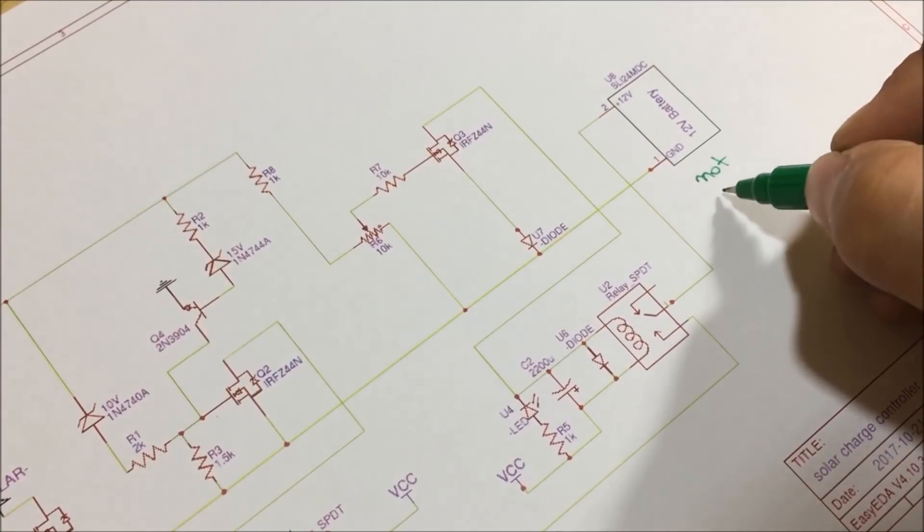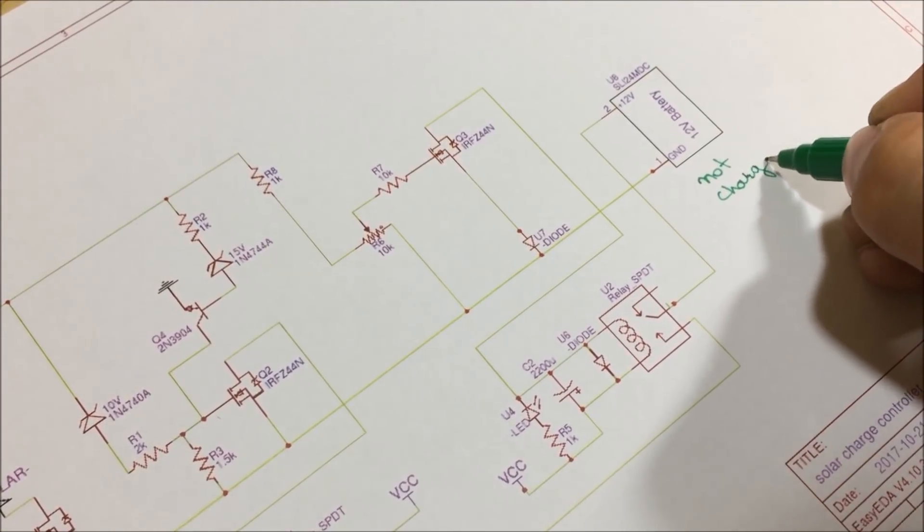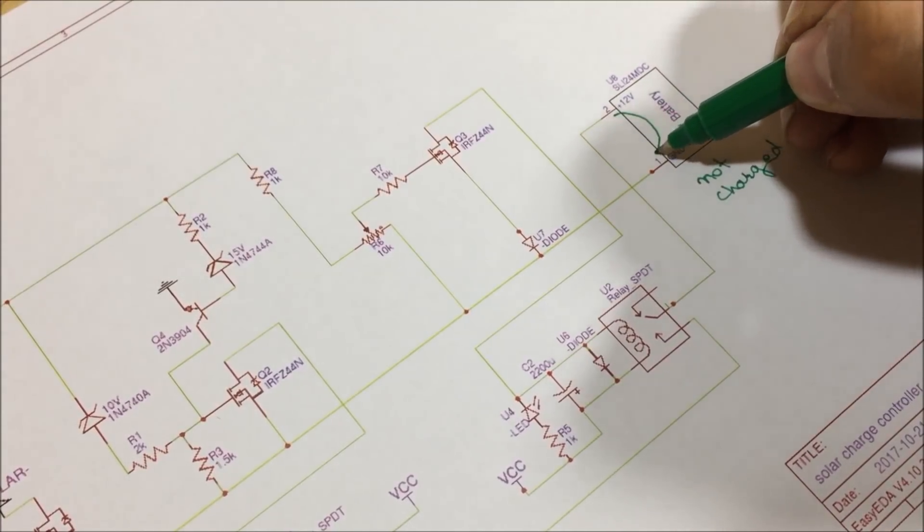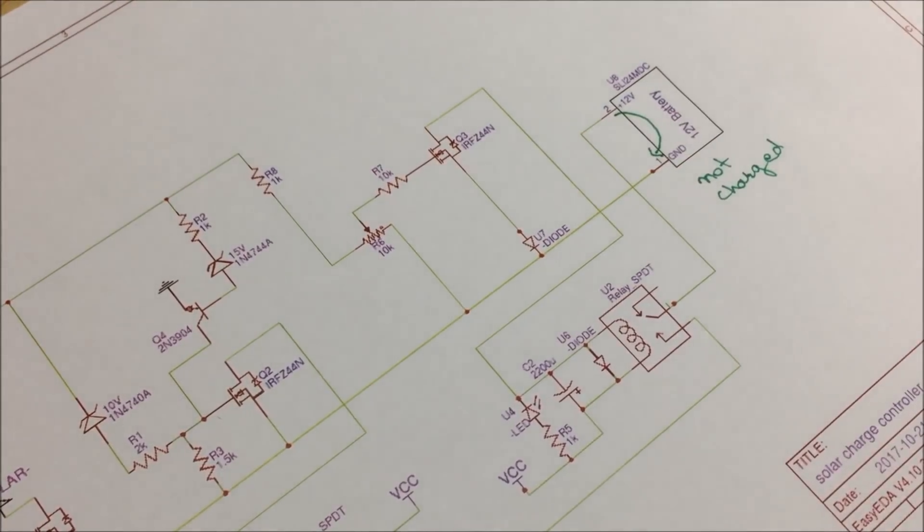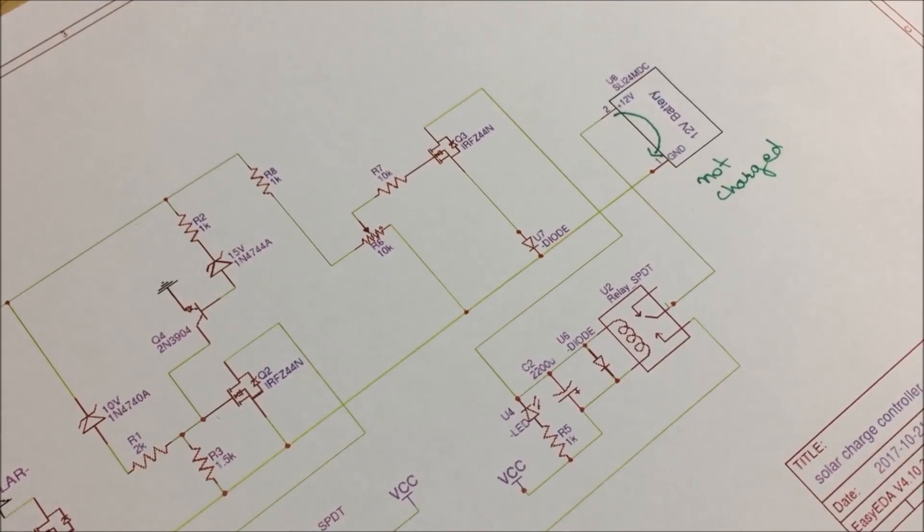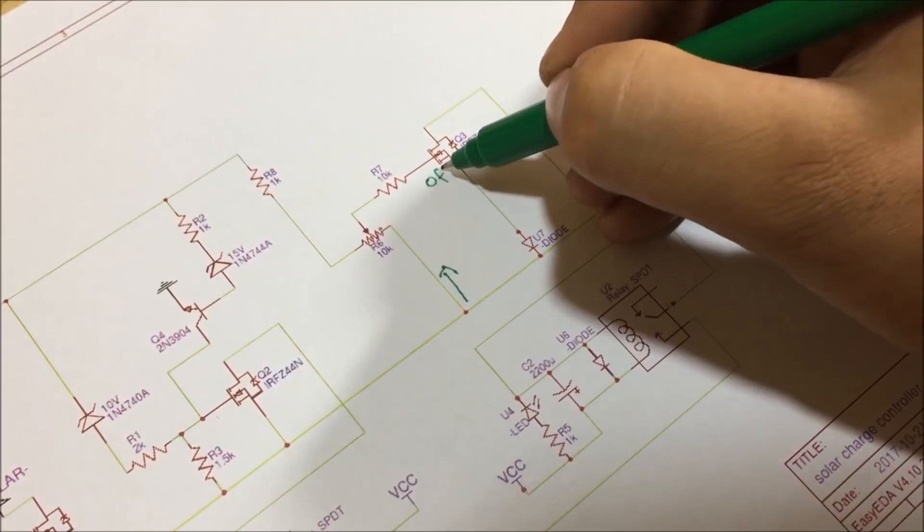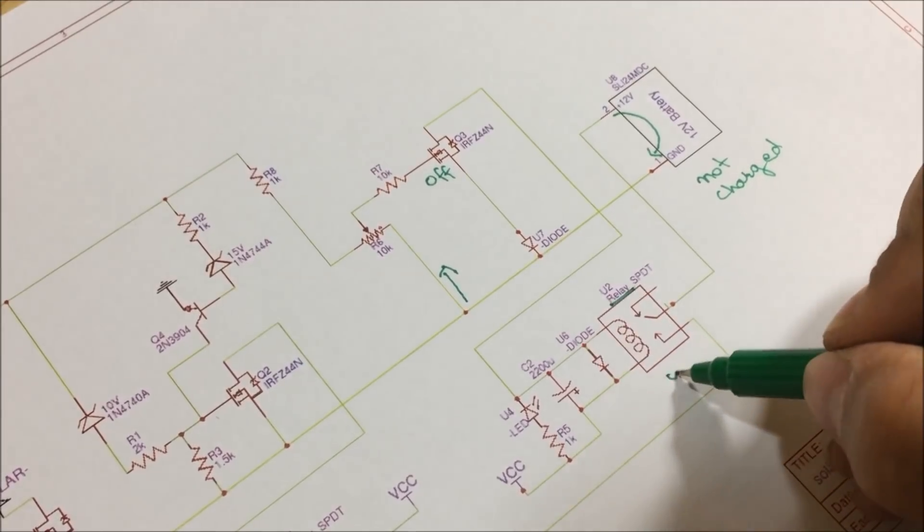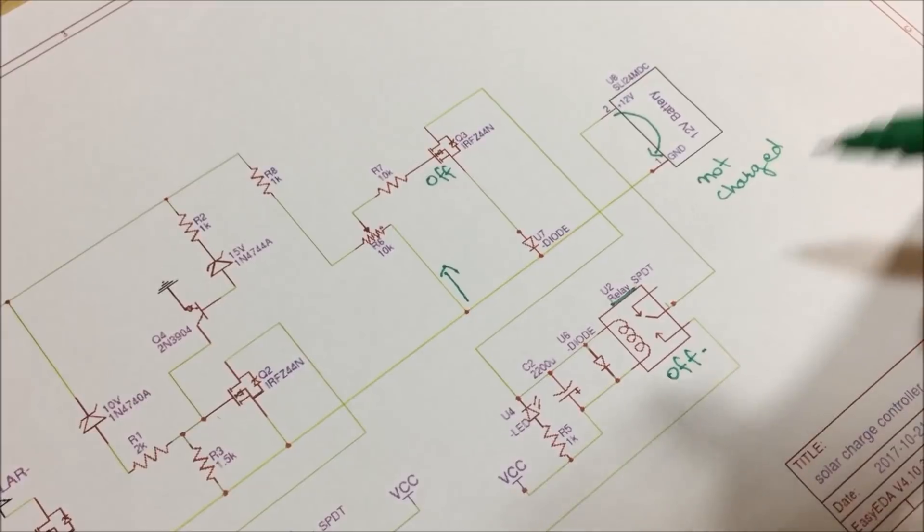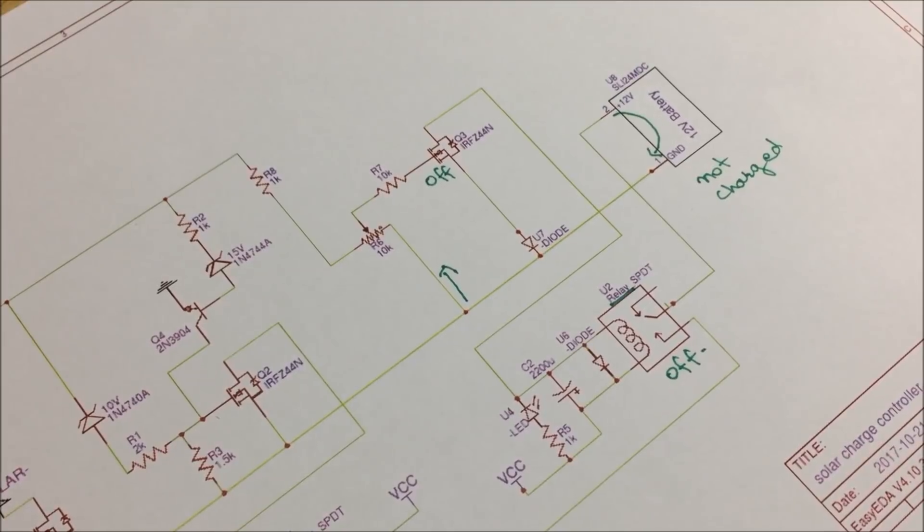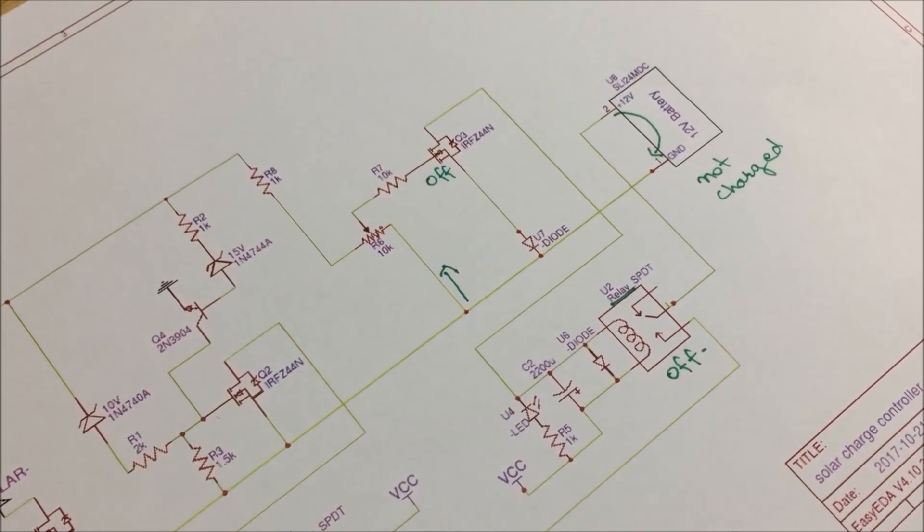To understand the over charge protection, let's assume that the battery is not fully charged. Most of the current flows through the battery. But when the battery charging is full, less current flows through it which turns off the second MOSFET, which ultimately turns off the second relay. And this cycle will repeat whenever the battery voltage decreases to a certain limit. This is how a solar charge controller actually works.